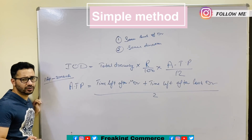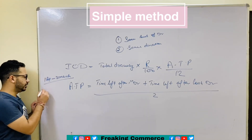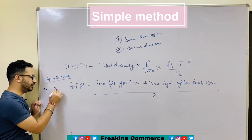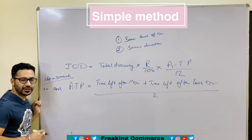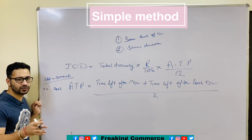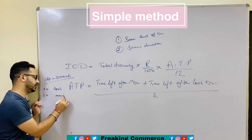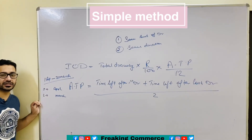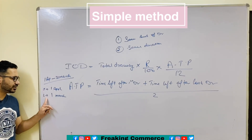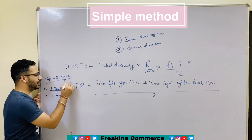If Mr. A withdrew 10,000 in the beginning of every month, the first drawing he made is in April, because this is the first month. Then second in May, third in June, fourth in July, and so on, because he is withdrawing every month. The last month is March. The date is the beginning — just the starting of the month — which means the date will be the 1st. This first drawing is 1st April and the last drawing is 1st March.